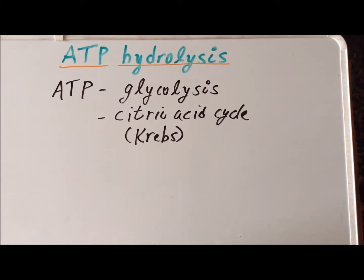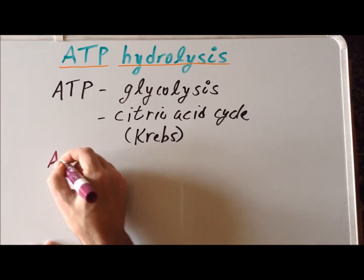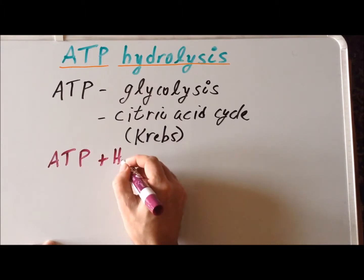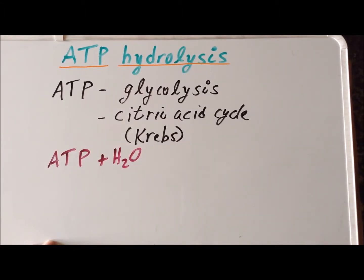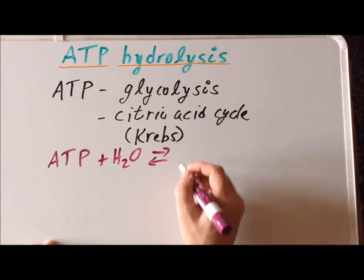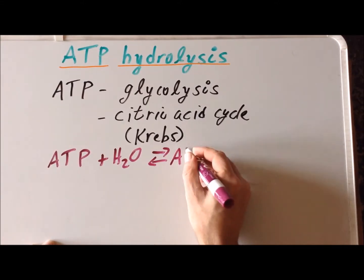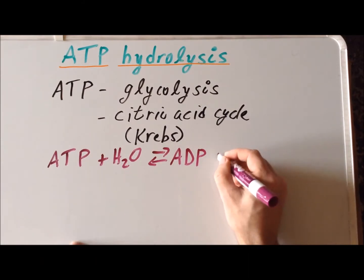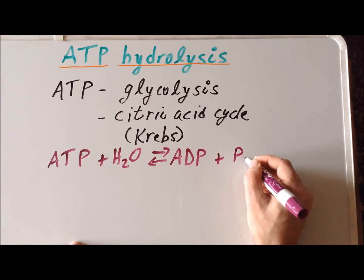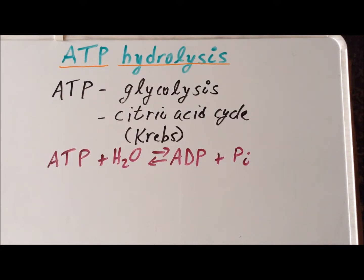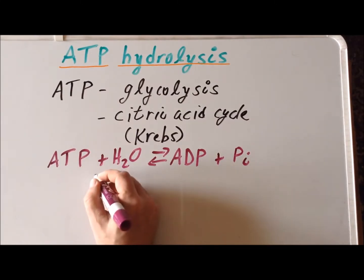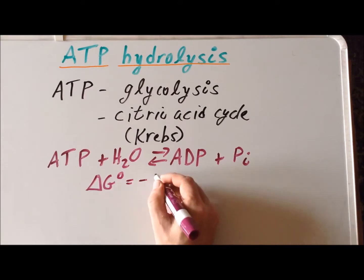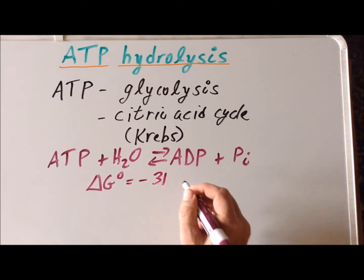The energy stored in ATP can be released by hydrolysis of ATP. This is the reaction of ATP with water, giving ADP — adenosine diphosphate, which only has two phosphate groups — plus one unit of inorganic phosphate. The standard Gibbs free energy for this reaction has been determined to be minus 31 kilojoules per mole.